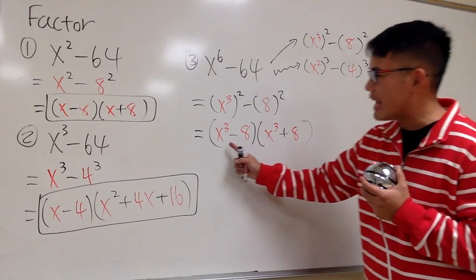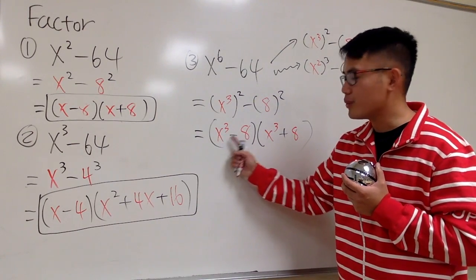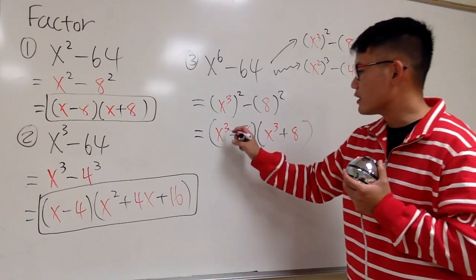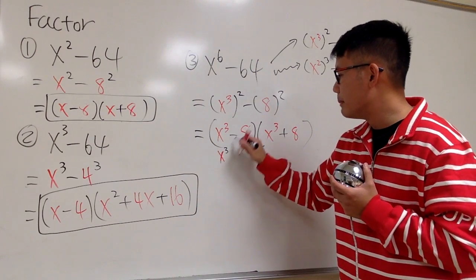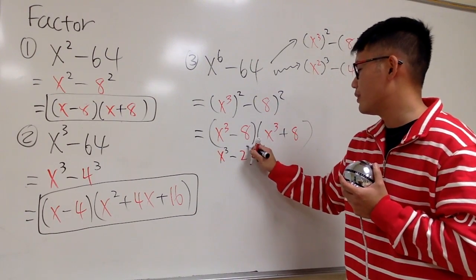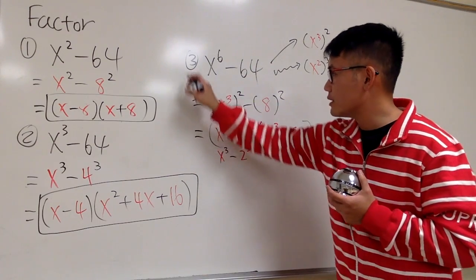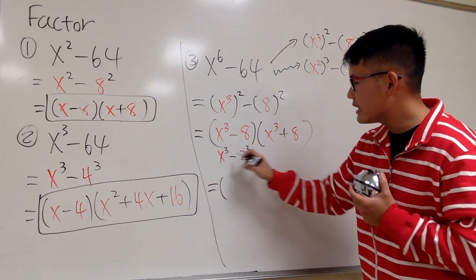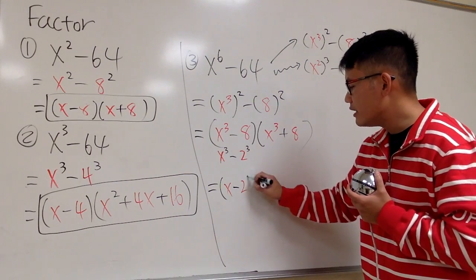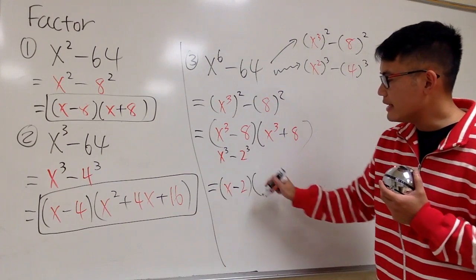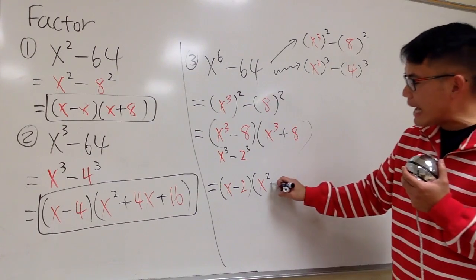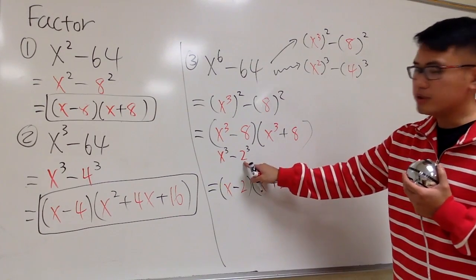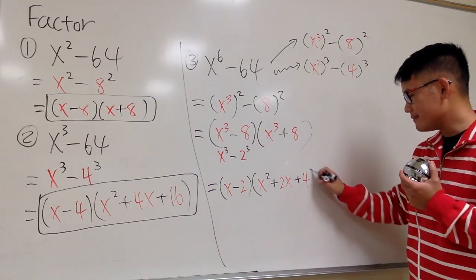Now, x to the third power minus 8 is a difference of two cubes — we look at it as x to the third power minus 2 to the third power. So we get x minus 2 in the first parentheses, and in the second parentheses we have x squared plus 2x plus 2 squared, which is 4. And then we are done with this factor.